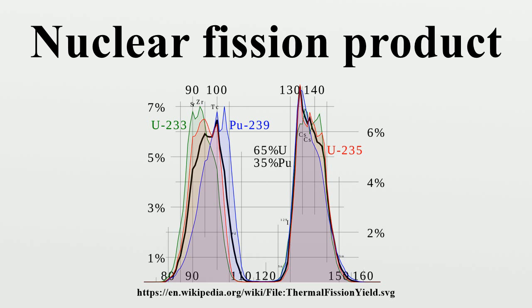The fission products themselves are often unstable and radioactive due to being relatively neutron-rich for their atomic number, and many of them quickly undergo beta decay. This releases additional energy in the form of beta particles, antineutrinos, and gamma rays.